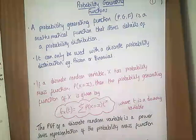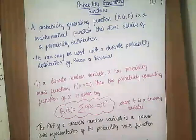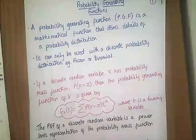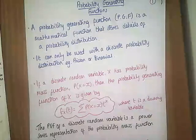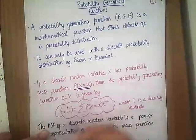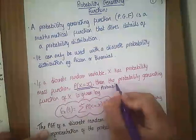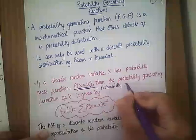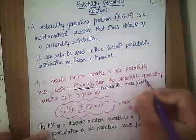Every year that I've taught this — it was new to the A-level when the A-level changed a couple of years ago — the biggest problem students have is trying to understand what a PGF actually is. Basically, all it is: if we have a probability mass function, the probability that X equals x, it's a way of writing a function for those probabilities.